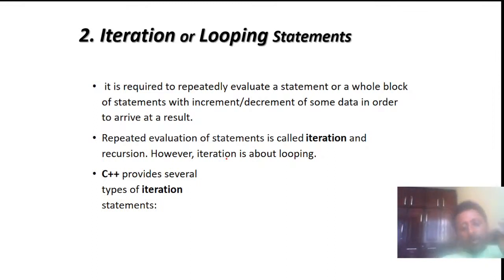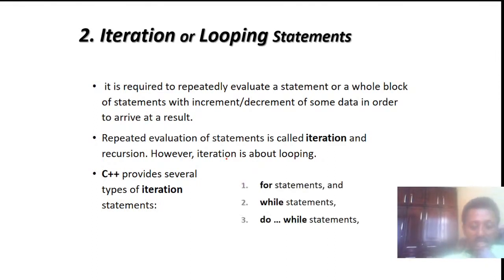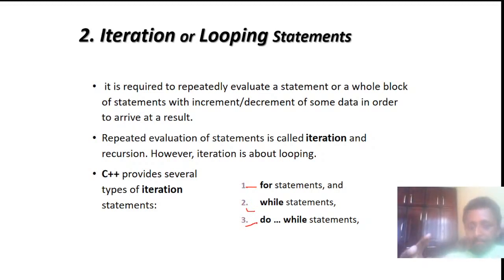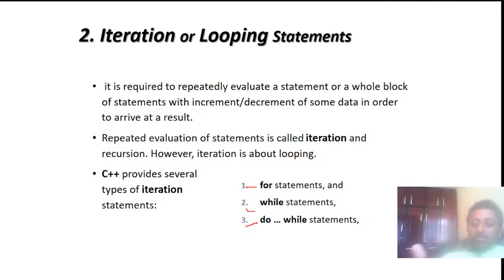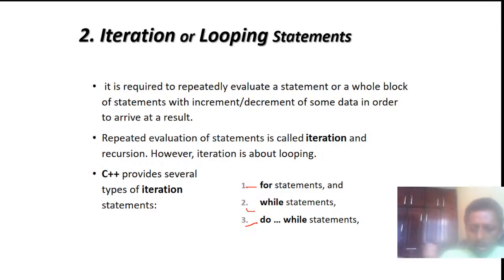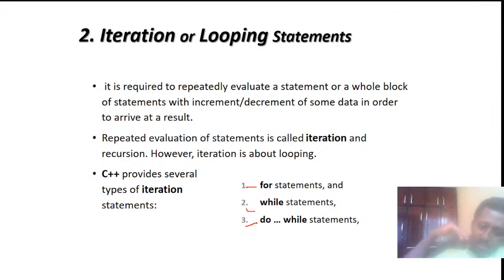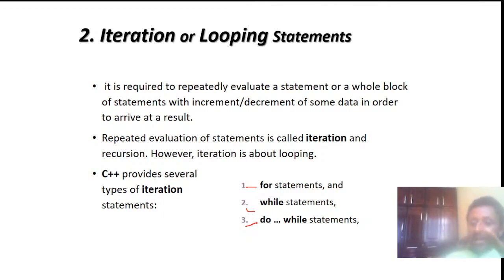C++ provides several types of iteration statements. The first one is the for loop, the second one is the while loop statement, and the third one is the do-while loop statement. Based on the scenario or the problem you want to solve, each has its own advantage and disadvantage. All three statements have the same function: to repeatedly execute some block of code enclosed by curly braces.